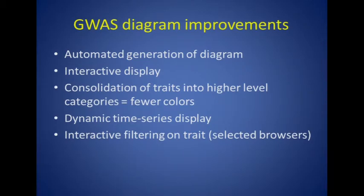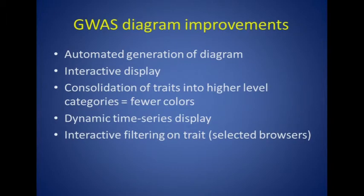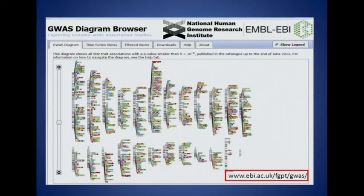The following features are now available on the new diagram display. First, the diagram is now completely automated — every new study or result that is added can be placed on the GWAS diagram using an algorithm. The display is interactive: you can zoom in and out and highlight certain traits of interest. We have consolidated traits into higher level categories, meaning fewer colors and the ability to discern the distribution of trait categories among different chromosomes. The power point progression showing the number of GWAS hits accumulated throughout the various quarters is now available in web form as a dynamic time series display. And with Chrome or Safari browsers, there is functionality to do interactive filtering on a trait.